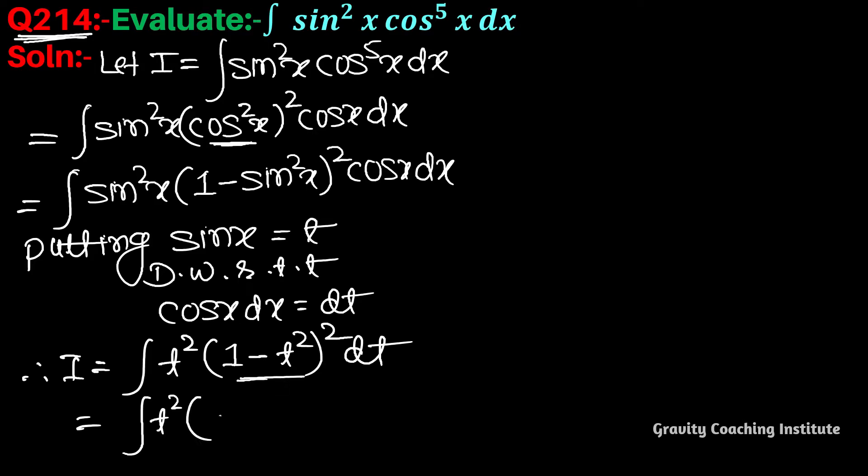Expanding this, we get 1 - 2t² + t⁴ dt. Then multiplying t² with this gives t² - 2t⁴ + t⁶ dt.